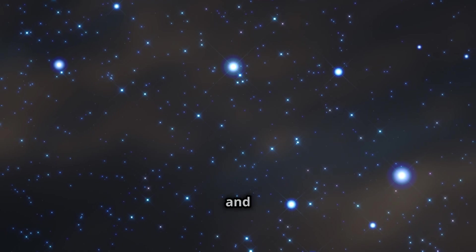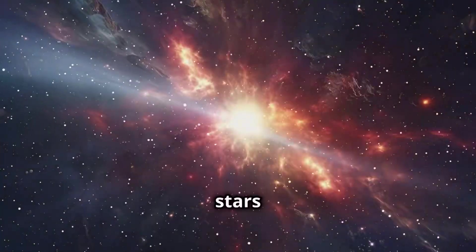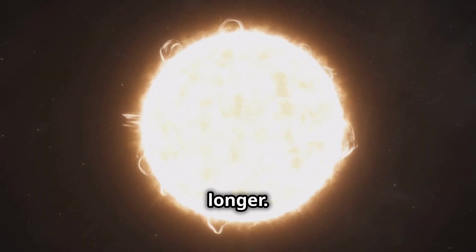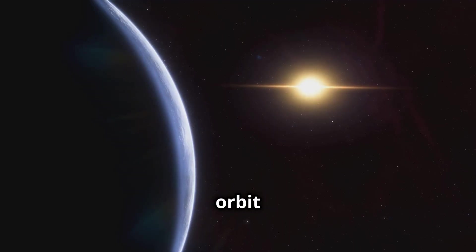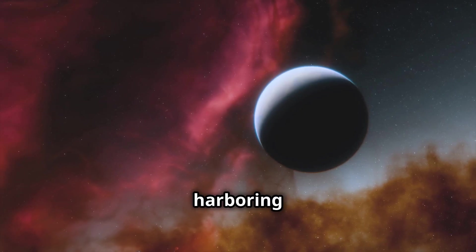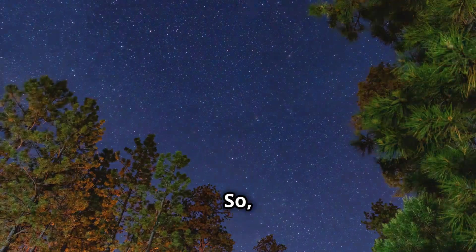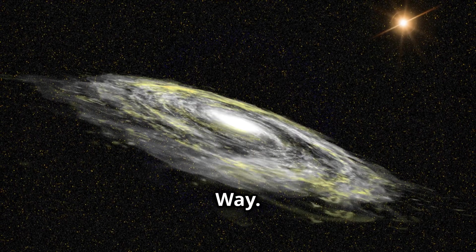Stars come in all shapes and sizes. Red dwarfs are smaller and cooler, while blue giants are massive and hot. Some stars explode as supernovae, while others, like our sun, live longer. There are even binary star systems. Planets may orbit these stars, some potentially harboring life. The diversity of stars is incredible. We are a small part of a grand universe. So, when you look at the night sky, remember the billions of stars in the Milky Way.